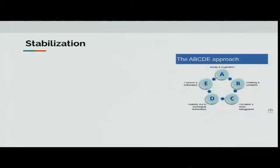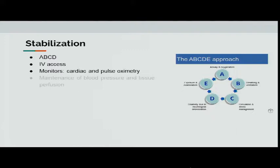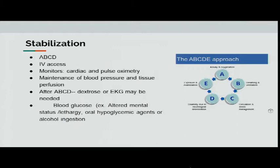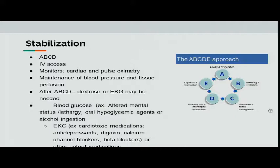For stabilization, use the ABCDE approach — airway, breathing, circulation, disability due to neurological deterioration. IV access, cardiac monitoring, and pulse oximetry are important. After ABCDE, if the patient has altered mental status, lethargy, or you know the ingestion is an oral hypoglycemic agent or alcohol, get a blood glucose level — the quick fix is dextrose. If the patient has ingested any cardiotoxic medications — antidepressants, digoxin, calcium channel blockers, beta blockers — then do an EKG. You're treating the patient, not necessarily the poison. The patient's status can change very rapidly with some ingestions, so reassess frequently for ventilator support needs.